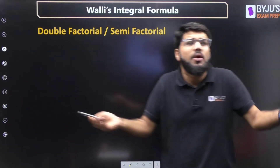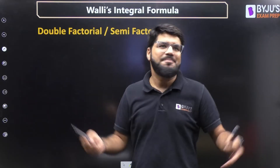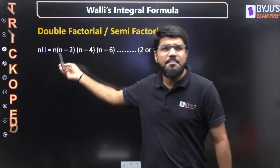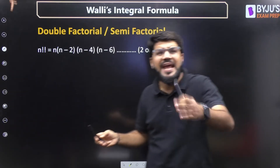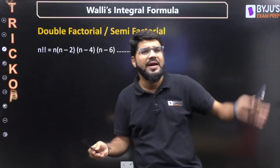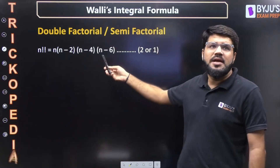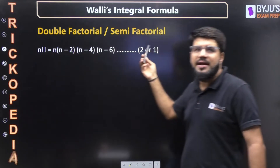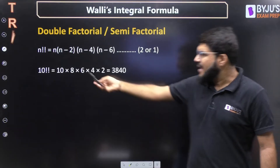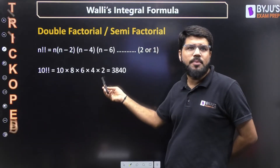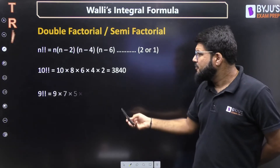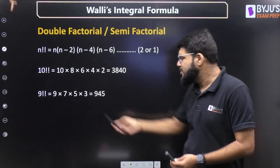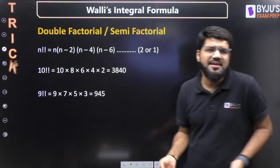You must have heard about factorials, but what are double factorials? n double factorial is the continuous product of alternate numbers from n, n−2, and so on. Unlike regular factorial which takes all numbers from n to 1, double factorial takes only alternate numbers. If you start from an even number you end at 2; if you start from odd you end at 1. For example, 10!! = 10×8×6×4×2, and 9!! = 9×7×5×3×1.